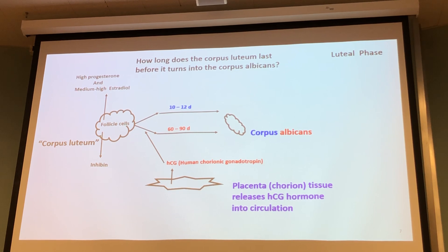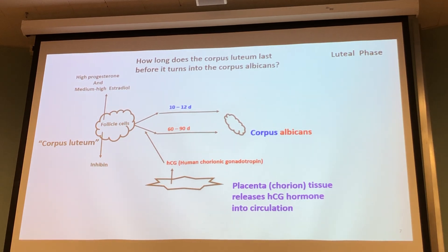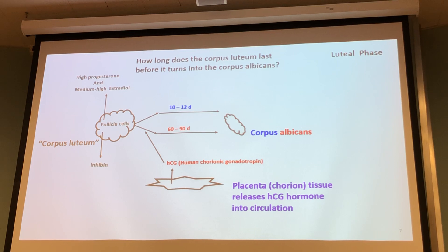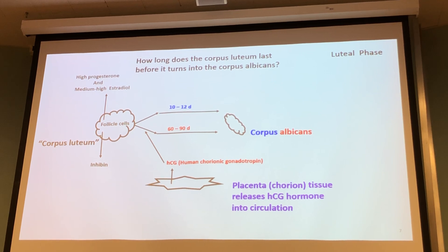It takes about 10 days for an ovum to travel down the fallopian tubes to reach the uterine cavity. But how long does an unfertilized egg live on its own? Only 24 hours. An unfertilized egg only lives for 24 hours. Sperm cells live on average five to seven days — maybe three to five realistically. So there's a very small window of opportunity for fertilization.